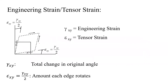For strains, we use the terms engineering strain and tensor strain. They are dealing with the same concept — both are shear strains. But when we talk about engineering strain, we are talking about the total change in angle, referred to as gamma_xy. Tensor strain, epsilon_xy, is much easier to work with in tensor algebra — that's why it's called tensor strain. It is simply half of the engineering strain; that's the only difference between the two.